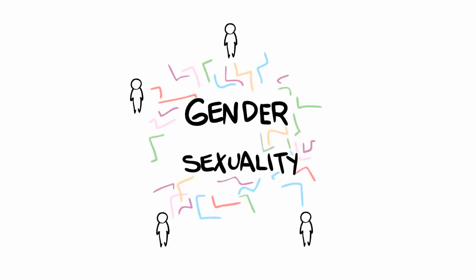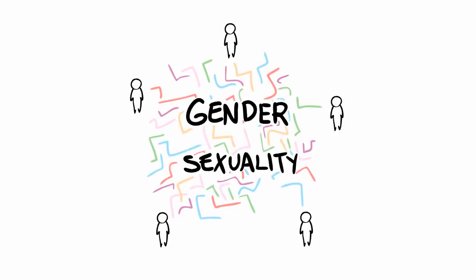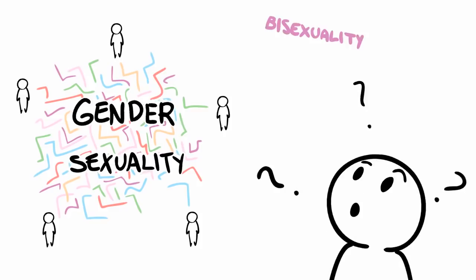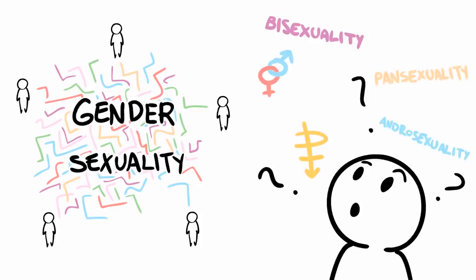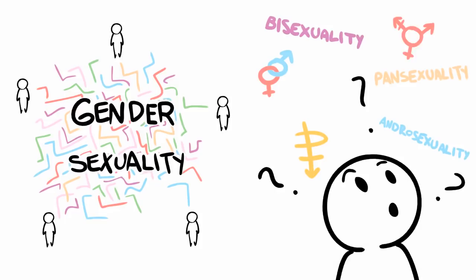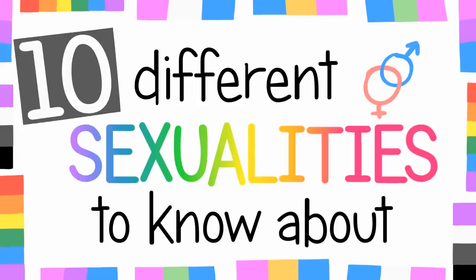Gender and sexuality are two concepts that are incredibly individualized, and so it shouldn't be surprising that they are so complex. It can be hard to navigate the world of sexuality due to the different terms and labels. This video aims to help you navigate this world by arming you with some definitions and examples of 10 different sexualities, some of which you might not even know about.